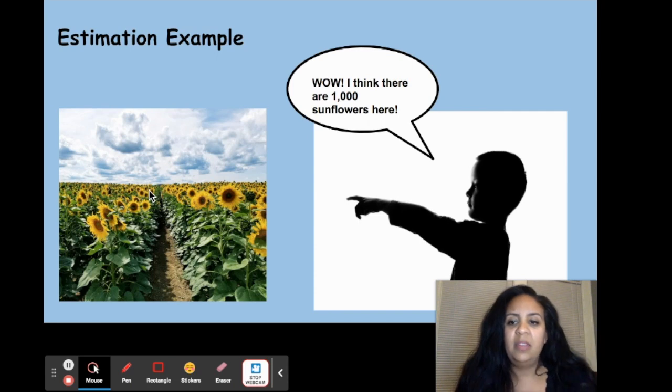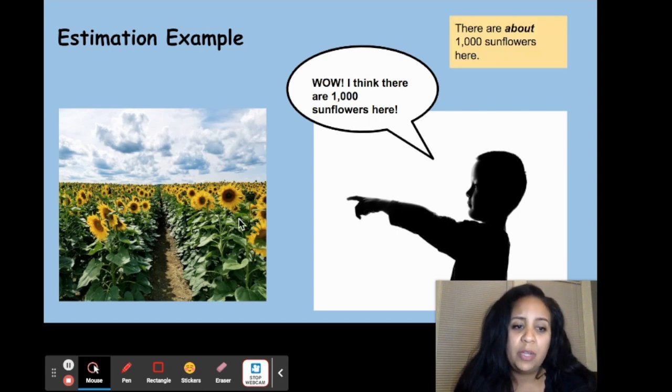Today we will practice estimation with measurement. When we are estimating, we use the word 'about' or 'approximately.' There are about 1,000 sunflowers here.